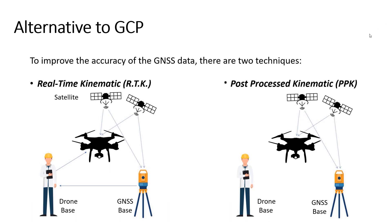Next is the PPK, or post-processed kinematic method. A PPK drone has a GNSS PPK receiver that gathers data from the satellite, and the data is corrected after the flight. In PPK technology, there is no communication between the GNSS base to the drone base or the drone base to the drone. Here in the image, you can see that PPK only requires two constant communications: the communication between the satellite and the GNSS base station, and the communication between the satellite and the drone. PPK is easier to set up and can be flown in environments where signals might get blocked by obstructions.